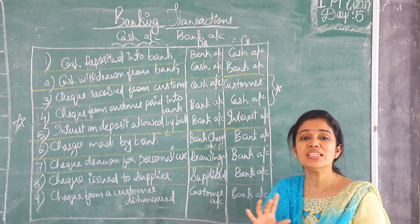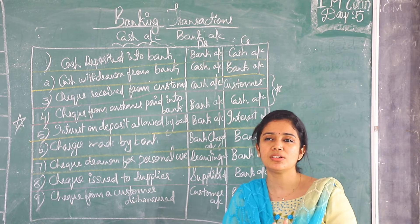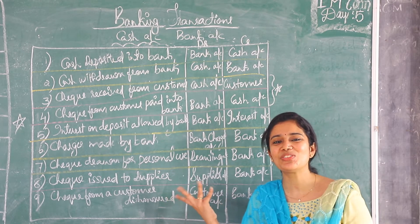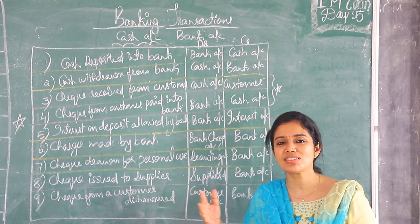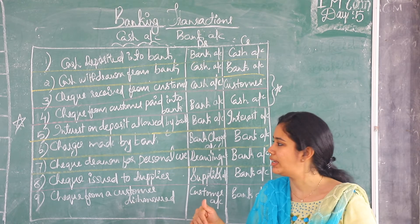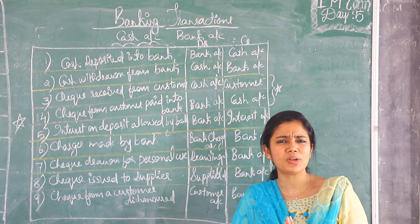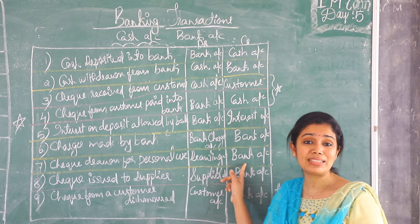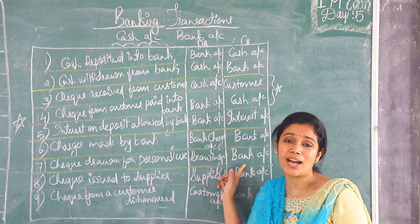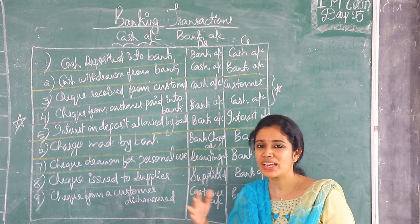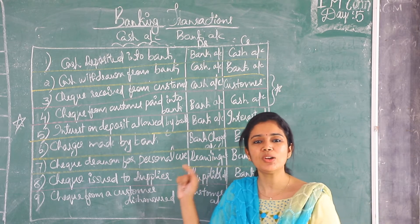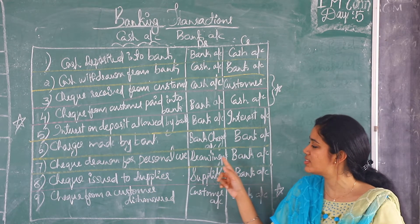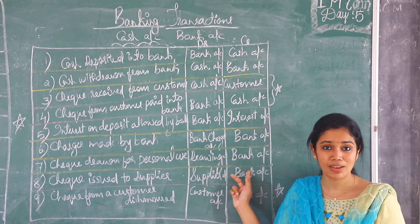Next is check drawn for personal use, or check used for personal use — similar to cash withdrawn for personal use. The entry is: drawings account debit to cash account.